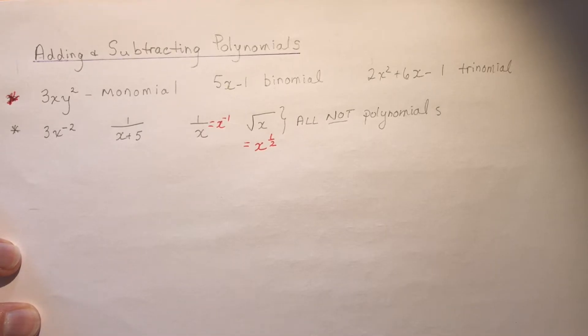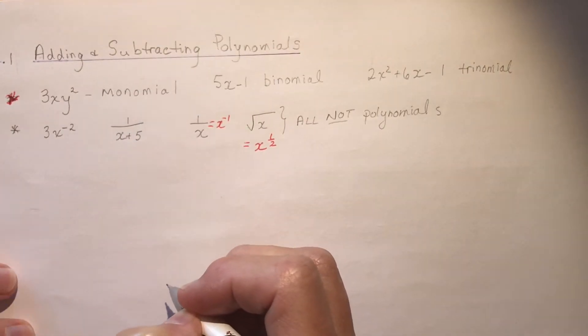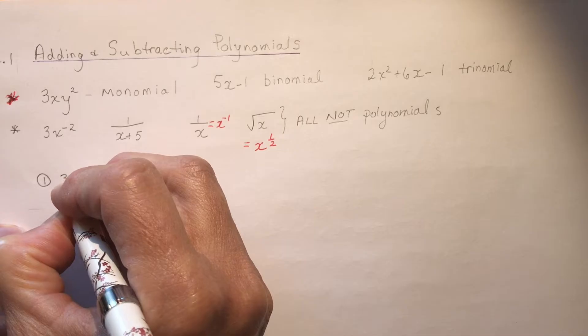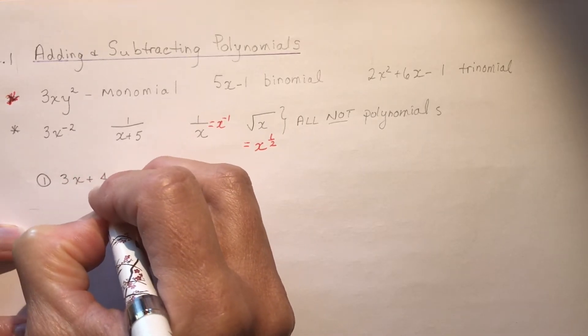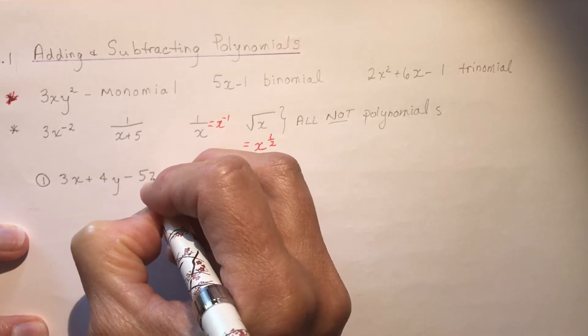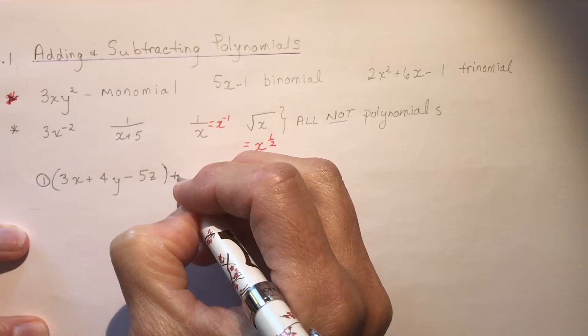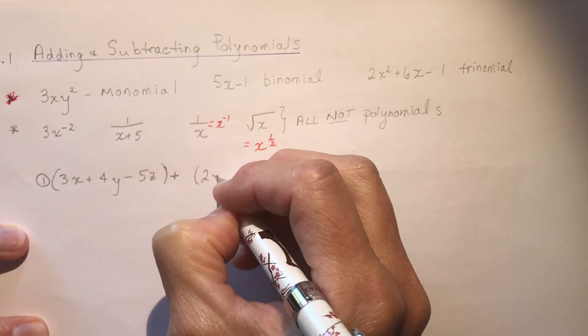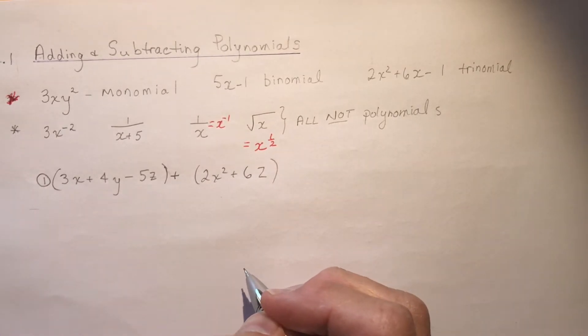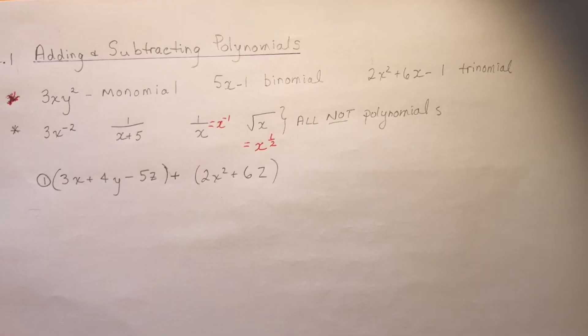So today we're going to add and subtract polynomials. This is 2.1 in your Nelson Functions 11 textbook. We're going to take a look at what sort of situations you can run into here, and then we're going to talk about something called equivalent expressions. So if I had 3x plus 4y minus 5z, and I wanted to add that to 2x squared plus 6z, if I wanted to add these two things together, you'd say, well, why are they in brackets?